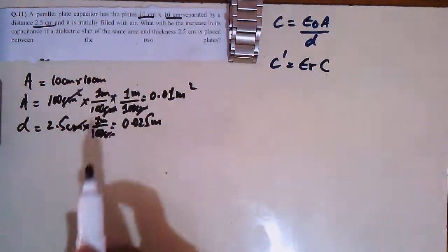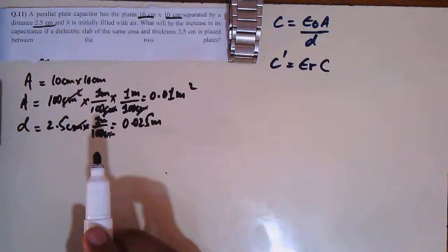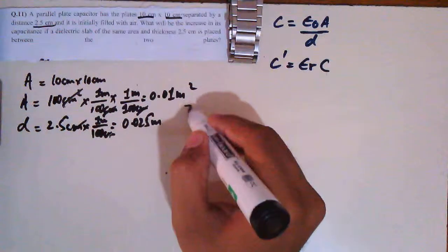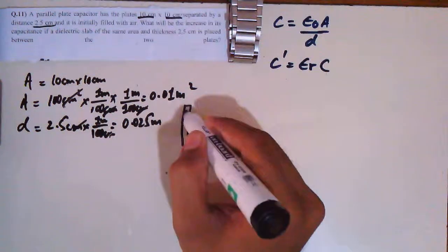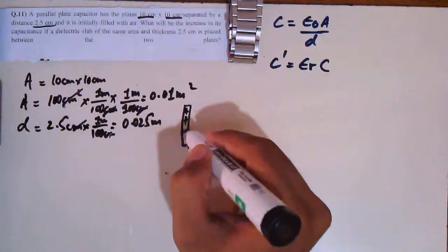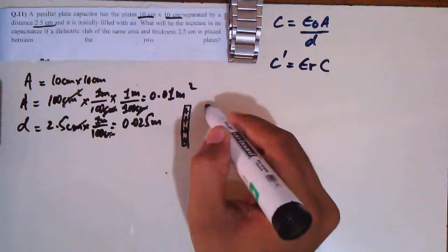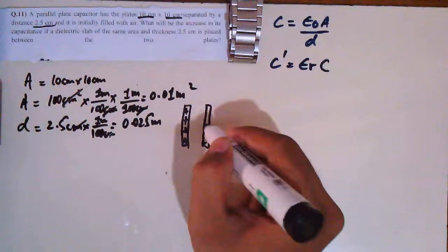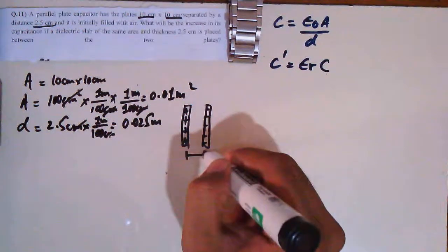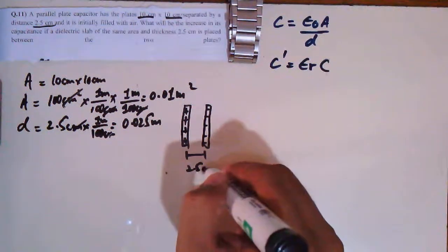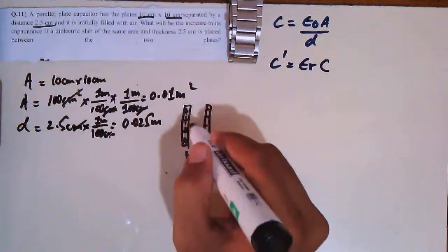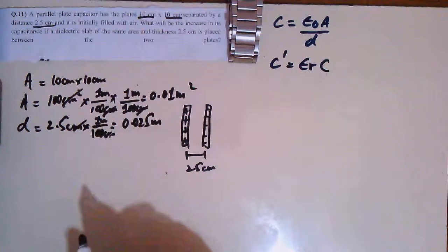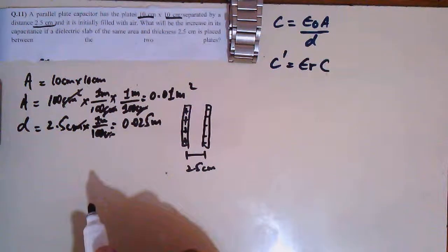And it is initially filled with air. We are talking about a basically empty capacitor. This is the positive plate and this is the negative plate. This distance is 2.5 cm and there is nothing in between — it is an empty capacitor. Filled with air means free space.